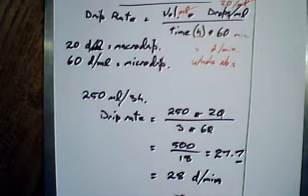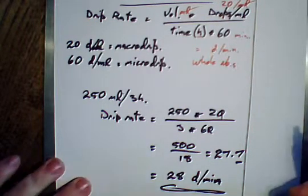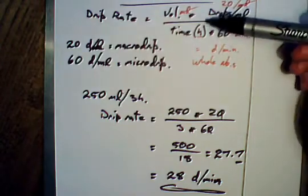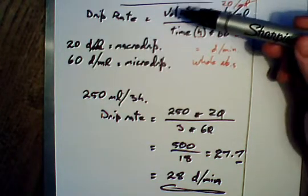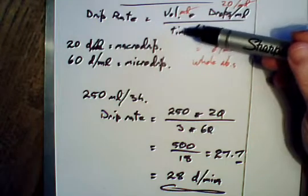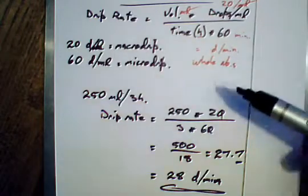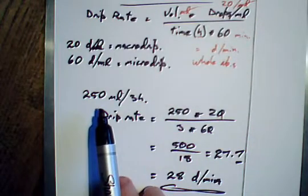That's it, that's as difficult as that one gets. So whenever you see this, write down your formula: volume times drips per minute over time times 60. It's easier to remember when you know you're going to have your volume and your time.